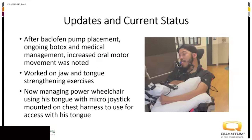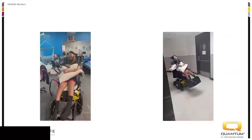He got a baclofen pump, and we did see some effects of muscle relaxation that translated up higher for him. He had some increased oral motor and jaw movement, which opened the doors for other mobility options. Now he drives with a mini proportional joystick off of a chest harness, and it works fabulous for him — he does so well, much more independent and more in control. We were able to take it to insurance and get that approved for him as well.